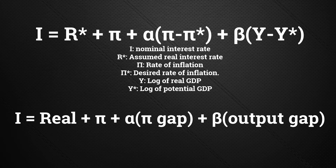The inflation gap is the difference between the rate of inflation and the desired rate of inflation. The real output gap — the beta element — is the difference between real GDP and potential GDP. Alpha and beta are weights for inflation's role versus output's role. In Taylor's original estimate, the weight was 0.5 for each of these.